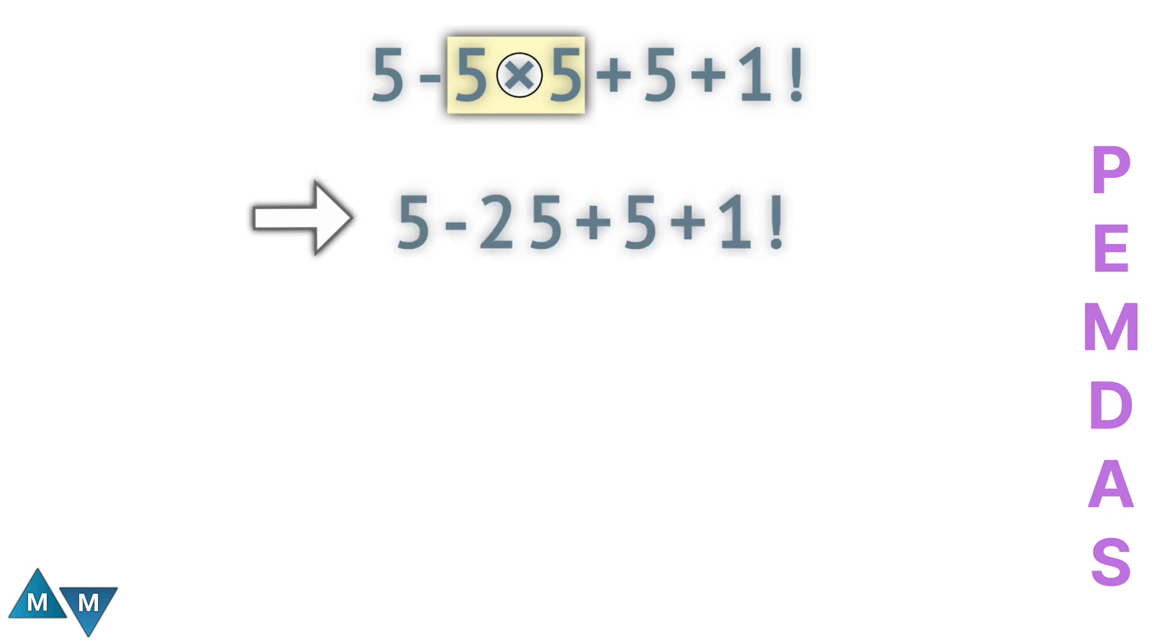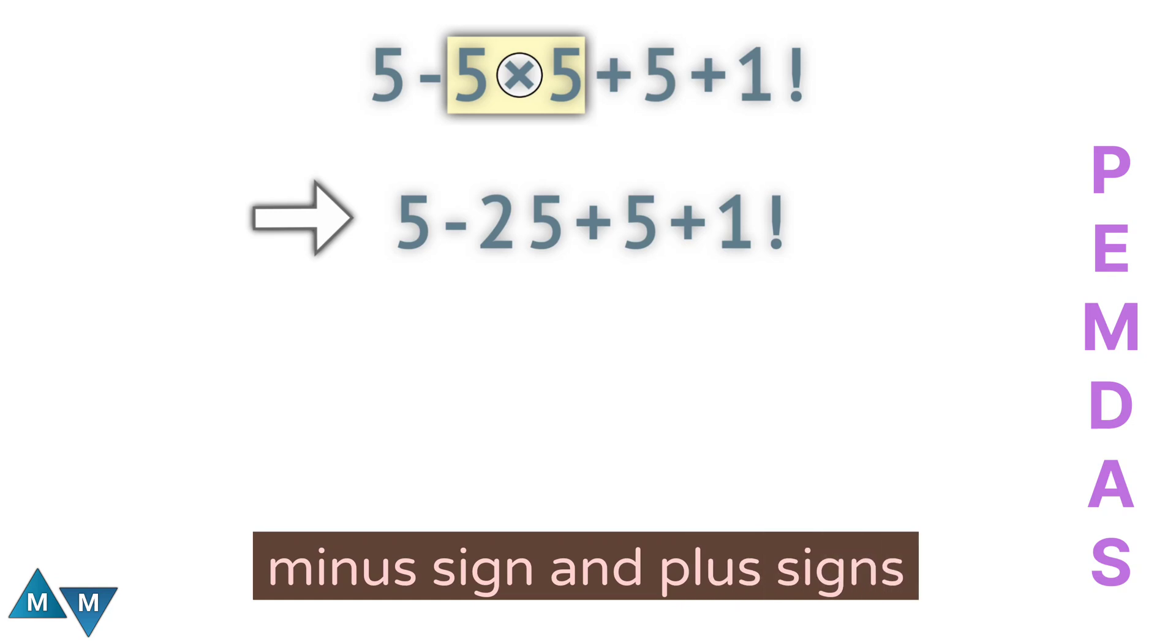Now we are left with minus and plus signs. Since both have the same priority, we perform the operation that appears first when moving from left to right. So 5 minus 25 gives minus 20. Now we have minus 20 plus 5 plus 1 factorial. Now minus 20 plus 5 will give minus 15.